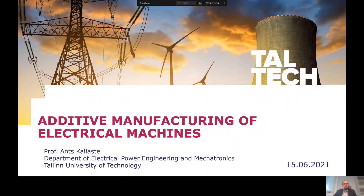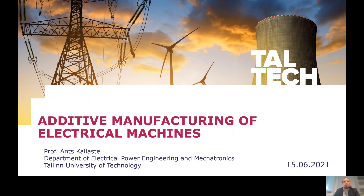Let's start with the topics on additive manufacturing of electrical machines. Before I start, I want to speak about where I'm coming from. I'm coming from Estonia. Estonia is west of Russia, close to St. Petersburg. We have Latvia as a neighbor and Finland to the north. Estonia is a very small country — around 45,000 square kilometers with a population of only 1.32 million people. Our capital is Tallinn. In Estonia we speak Estonian language, and English is very widely spoken. It's also possible to speak Russian, as we have quite a big Russian-speaking population.